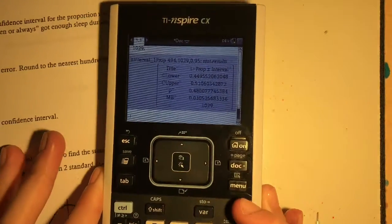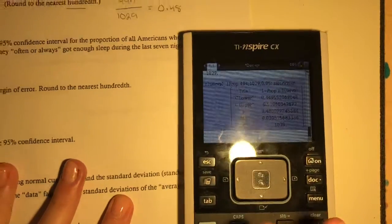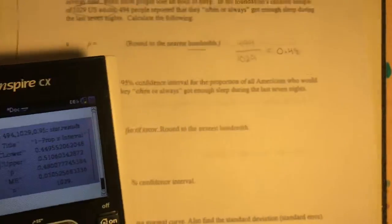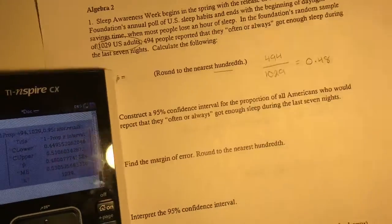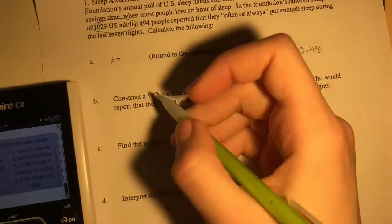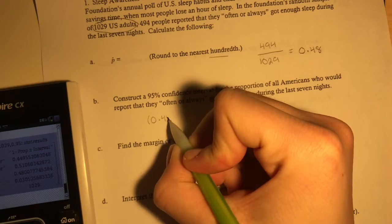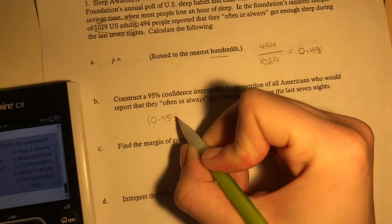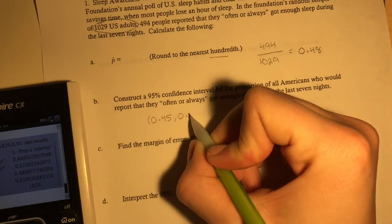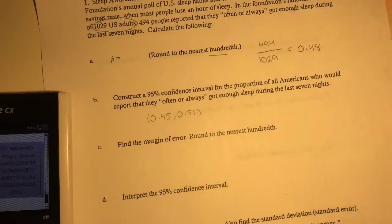So you're given this amazing, beautiful list. And since it's asking for the interval, we're just going to take the lower bound and the upper bound. And it says round to the nearest hundredth. So lower bound is 0.45 and the upper bound is 0.51.